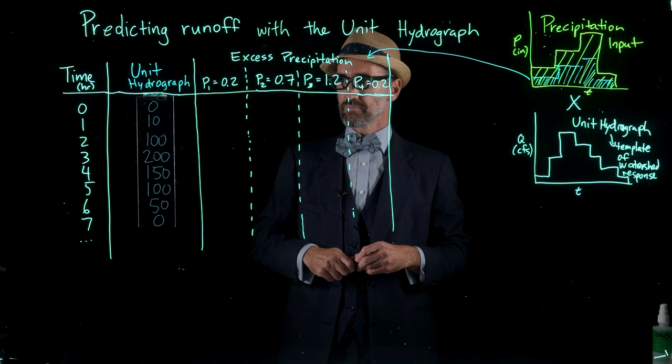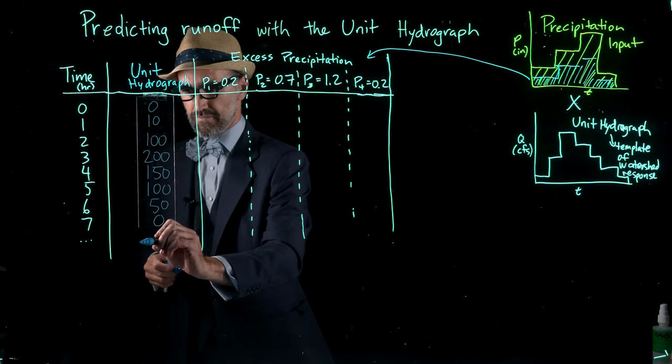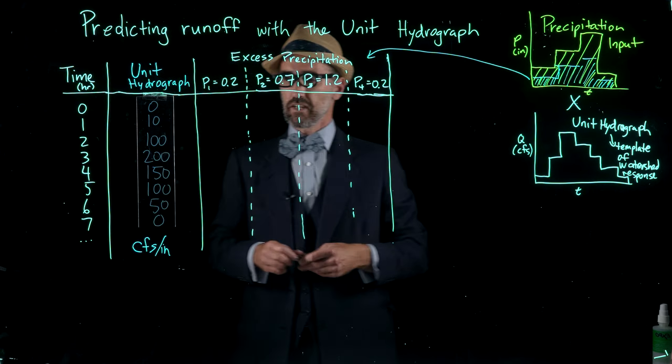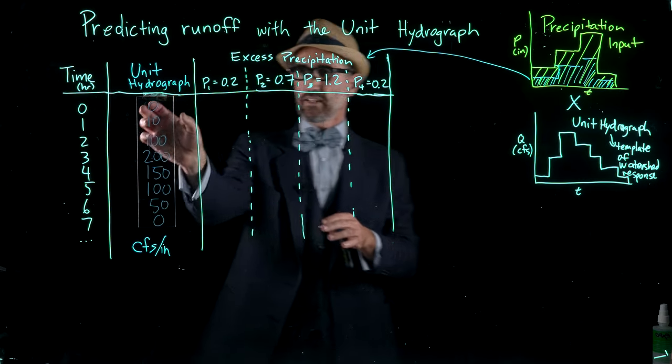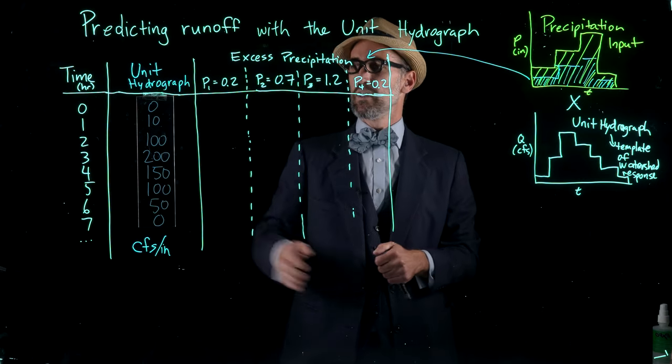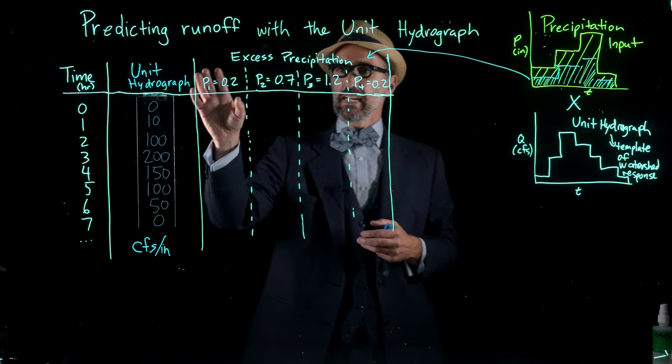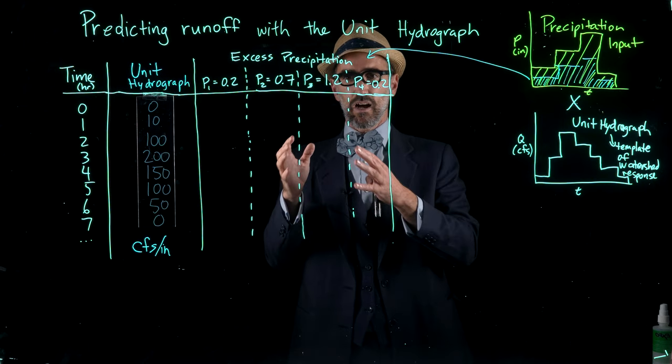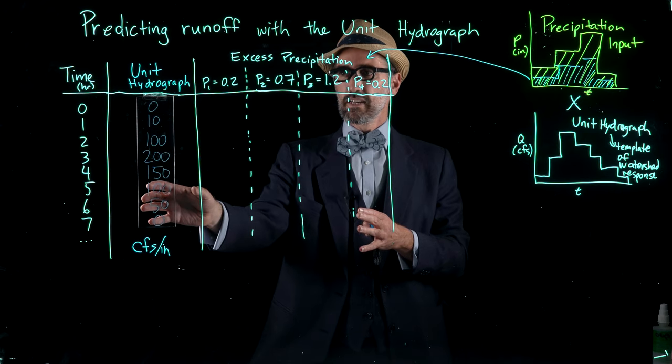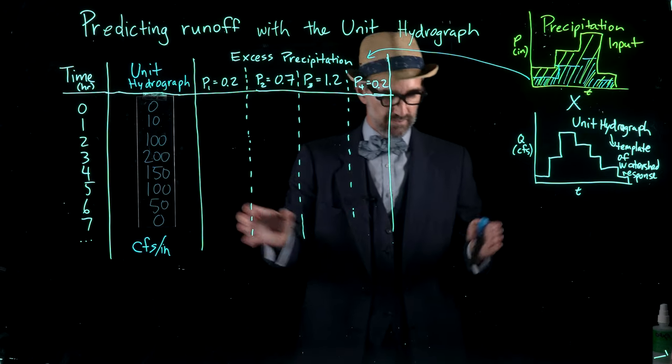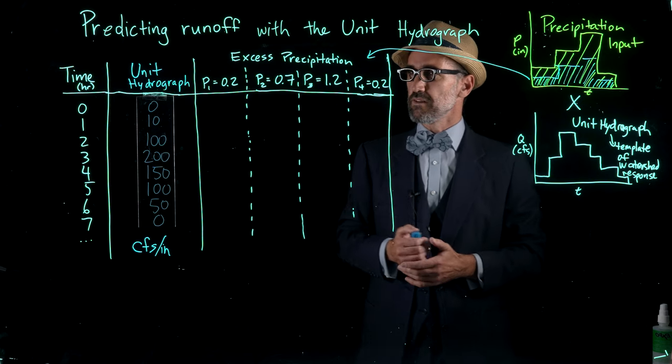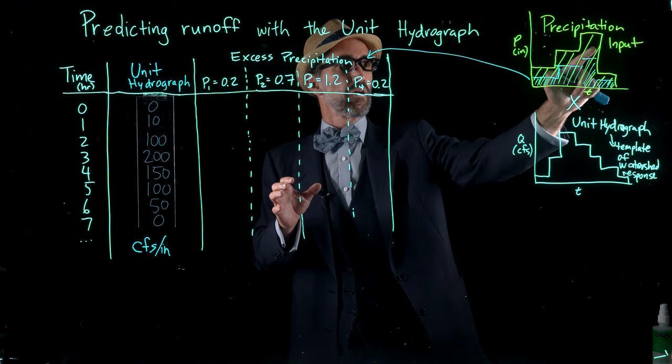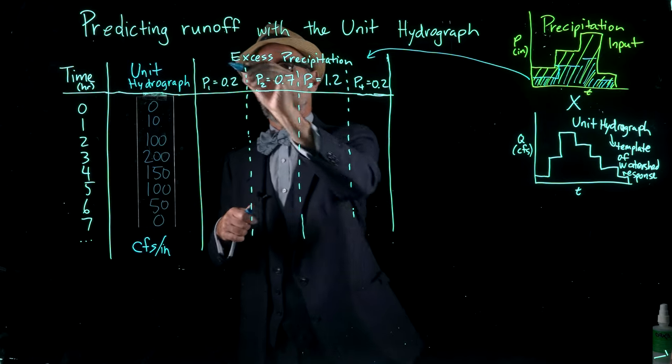Our unit hydrograph is in units of cubic feet per second per inch of rain. So if we have a single inch of rain, this is the response of this watershed in stream flow. For each of the precipitation input signals, we linearly assume that each unit hydrograph response is linear and then sum these through time. I've removed the abstraction from the precipitation input to now have this excess precipitation.